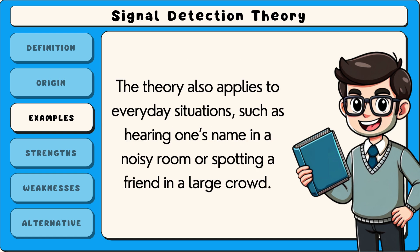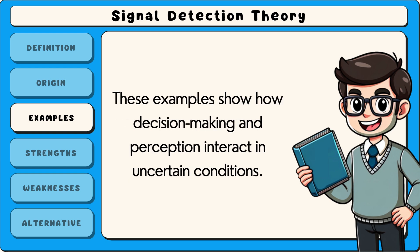The theory also applies to everyday situations, such as hearing one's name in a noisy room, or spotting a friend in a large crowd. These examples show how decision-making and perception interact in uncertain conditions.